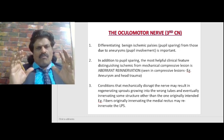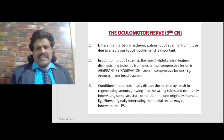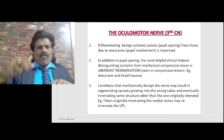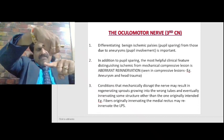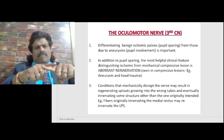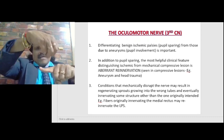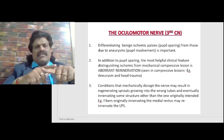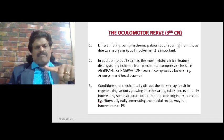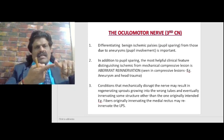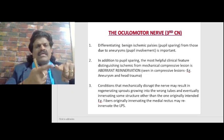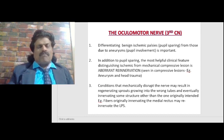Let's talk about the localization of the third cranial nerve. Differentiating benign ischemic palsies — that is pupillary sparing — from those due to aneurysms with pupillary involvement is important. A compressive lesion like an aneurysm will affect the superficially placed parasympathetic pupillary fibers first, causing pupillary involvement. In contrast, ischemic lesions affect the center of the third nerve and therefore spare the superficial parasympathetic fibers, making them pupillary sparing third nerve palsies.